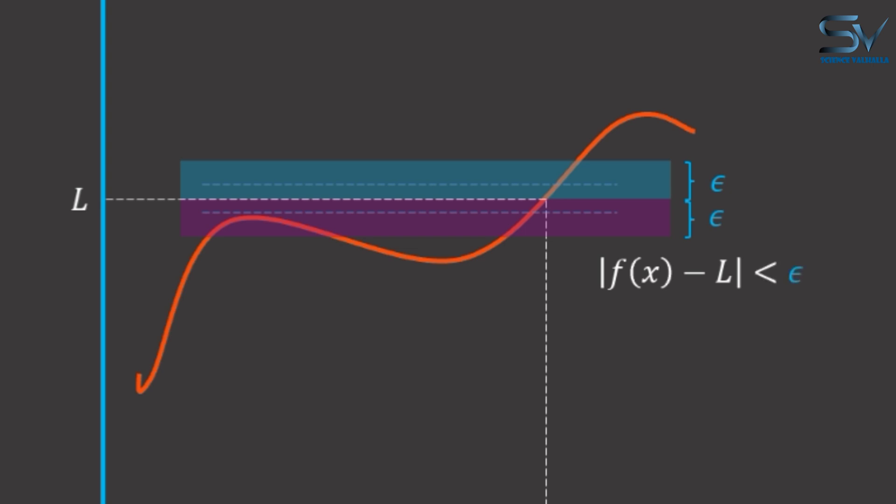It follows that the magnitude of f(x) minus L should always be less than the allowed tolerance epsilon. We'll now apply these ideas to a more general function. Examine this function—this function's limit at point a is L.